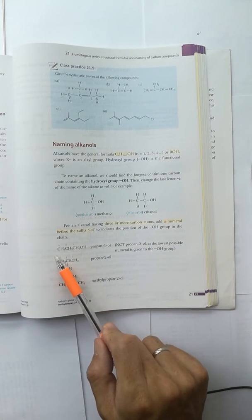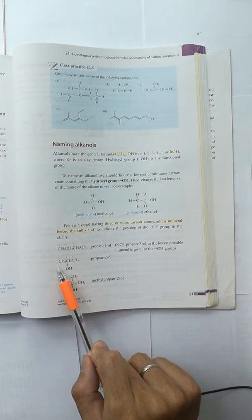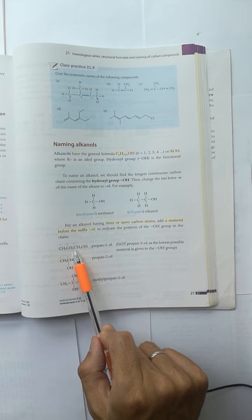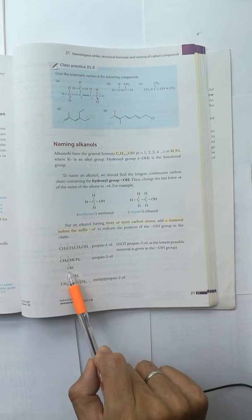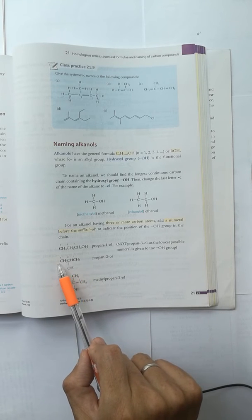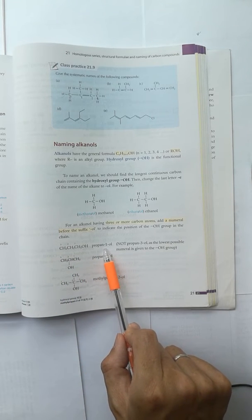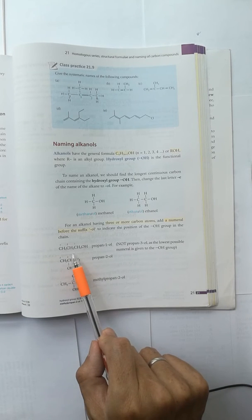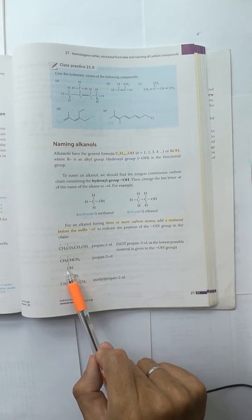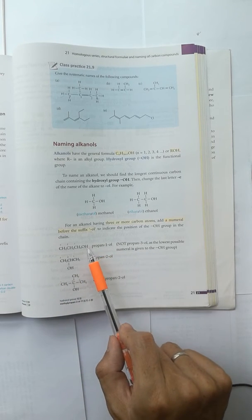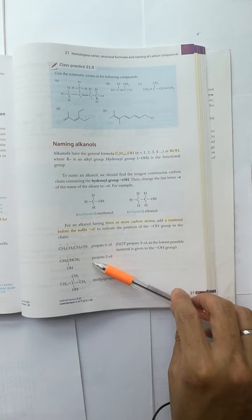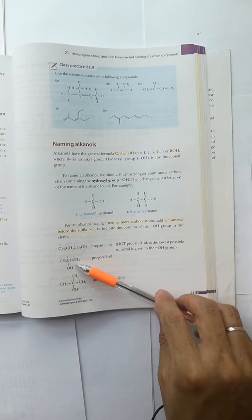However, starting from 3 carbons, the OH can be drawn to the first carbon or drawn to the second carbon. If it is drawn to the third carbon, it is the same as the first carbon. So drawn to the first carbon is propan-1-ol, drawn to the second carbon is propan-2-ol. And we need to have numbering to distinguish the different propanols.